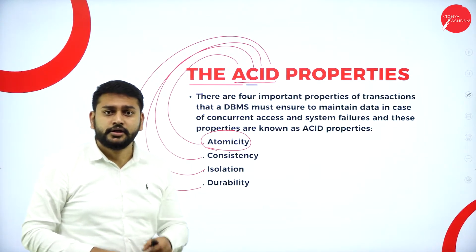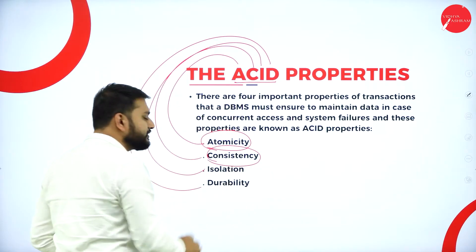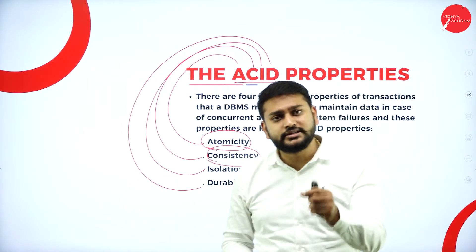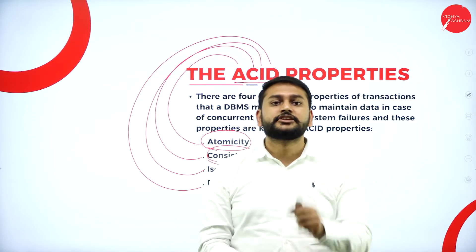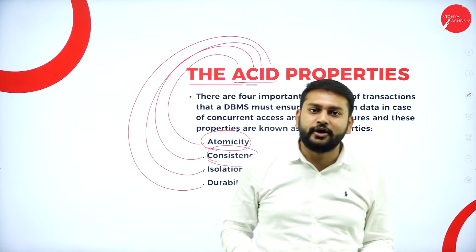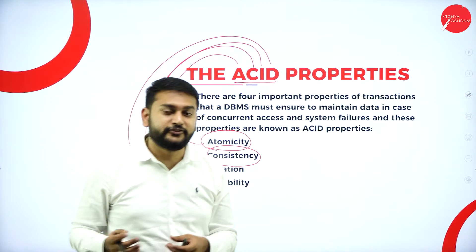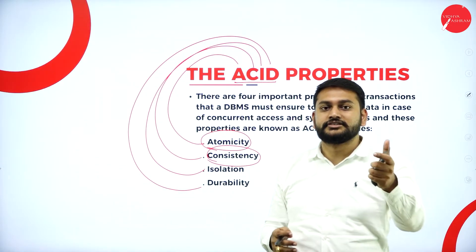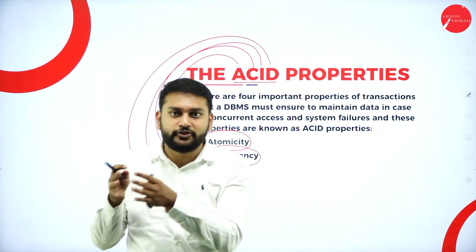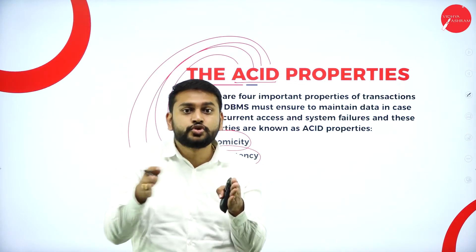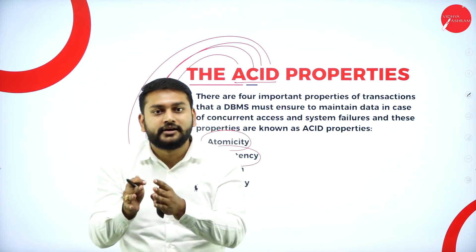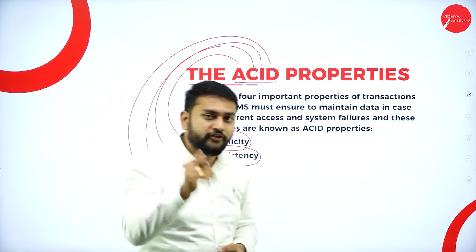The second property is Consistency. To understand consistency, consider this example: if I ask you your marks, some of you will say 60 percent, some will say first class, and some will say 365 total marks. Some are answering in percentage, some in total, some in class — there is no consistency, and the value varies from one to another.